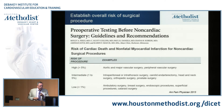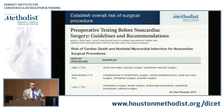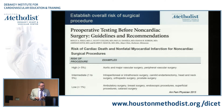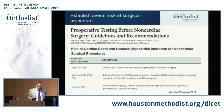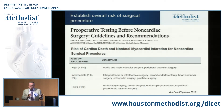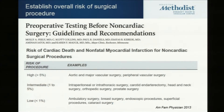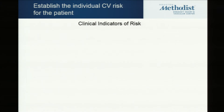That classification is important, as shown in this paper from the Journal of Primary Care written by a group from Mayo Clinic. High risk is over 5% probability of adverse events, intermediate is between 1% and 5%, and low risk procedures are less than 1%. That's why the initial classification of the surgical risk of the operation itself is so important.